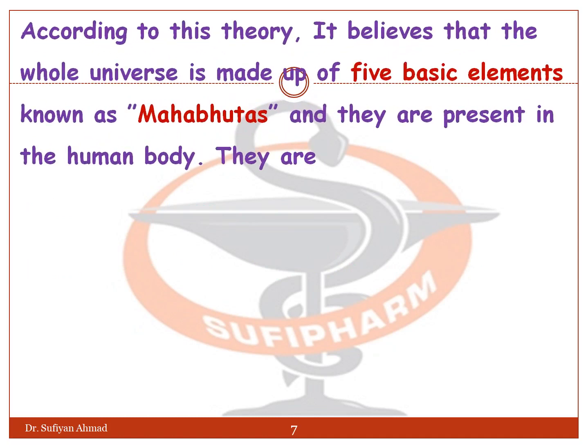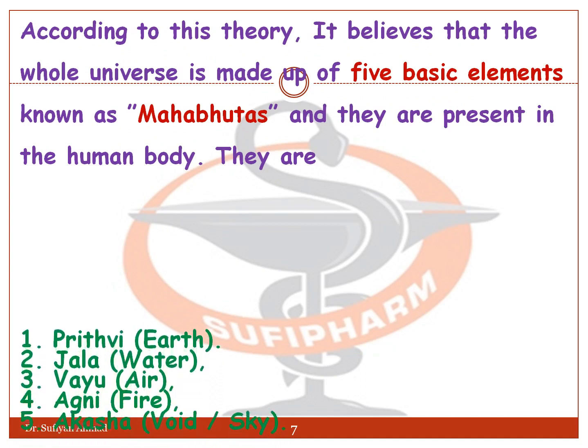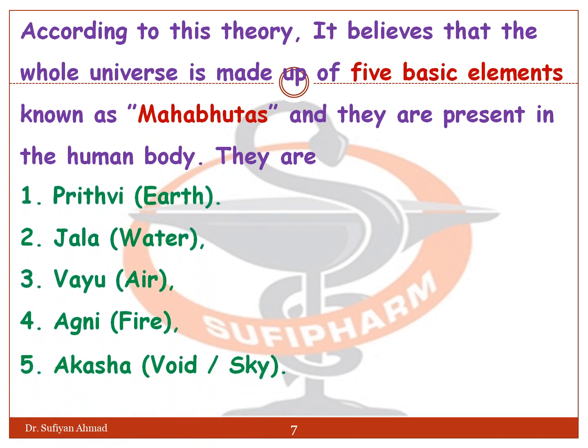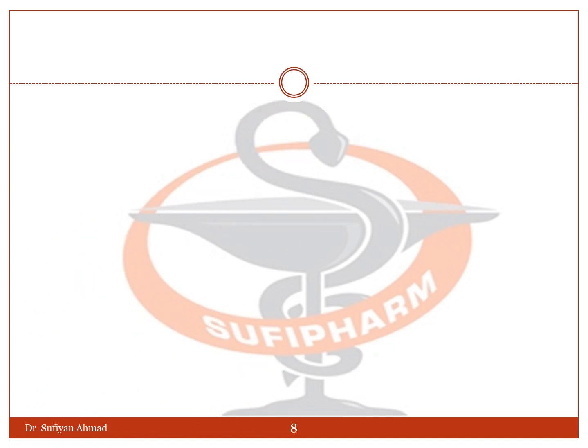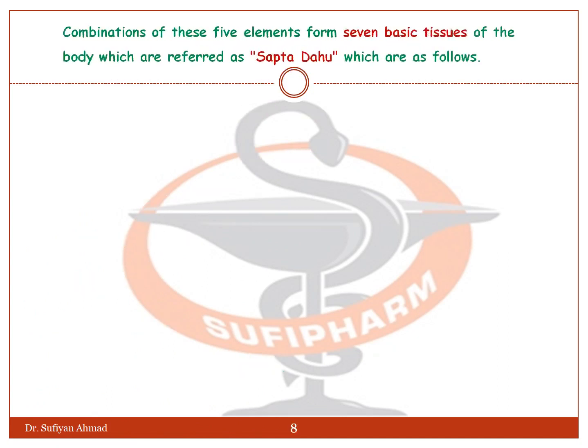According to the Pancha Mahabhuta theory, the whole universe is made up of five basic elements known as Mahabhutas, and they are present in the human body. They are: Prithvi means Earth, Jala means Water, Vayu means Air, Agni means Fire, and Akasha means Sky.